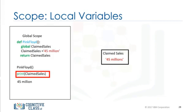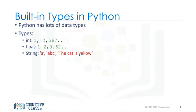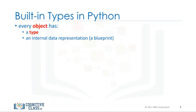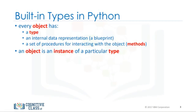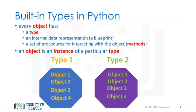In this module, we are going to talk about objects and classes. Python has many different kinds of data types: integers, floats, strings, lists, dictionaries, booleans. In Python, each is an object. Every object has the following: a type, internal representation, and a set of functions called methods to interact with the data. An object is an instance of a particular type. For example, we have two types — type 1 and type 2. We can have several objects of type 1 shown in yellow. We also have several objects of type 2 shown in green. Every time we create an integer, we are creating an instance of type integer, or an integer object. In this case, we are creating five integer objects. Similarly, every time we create a list, we are creating an instance of type list, or a list object.